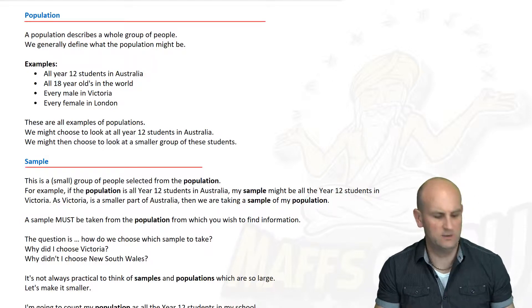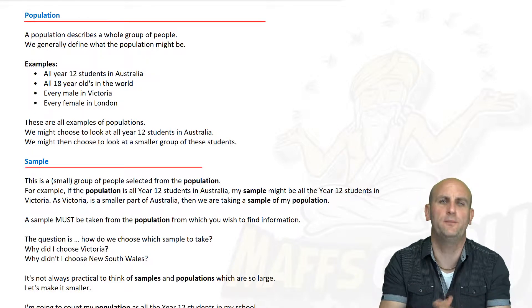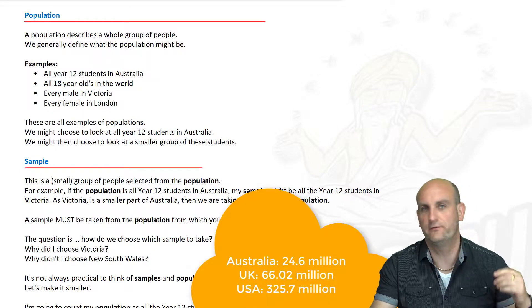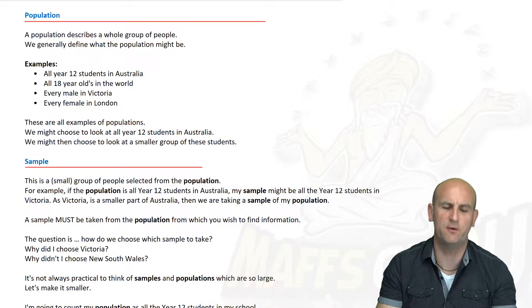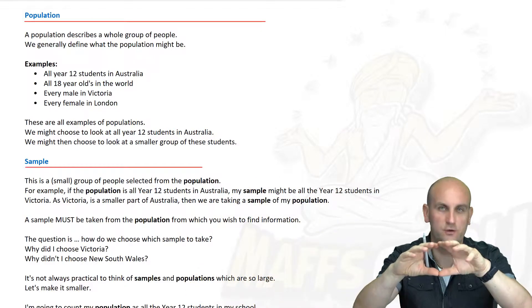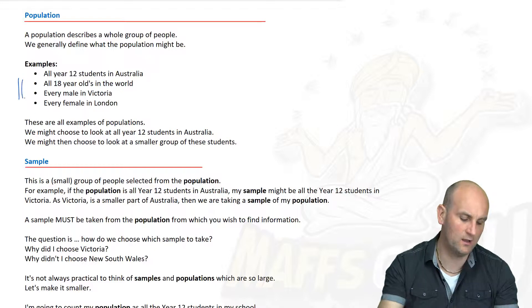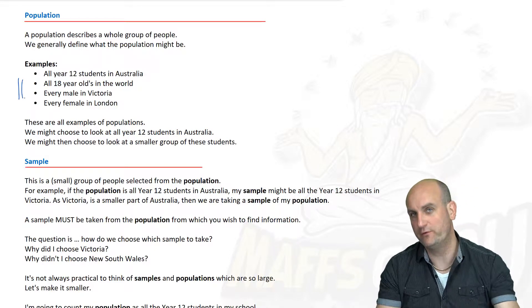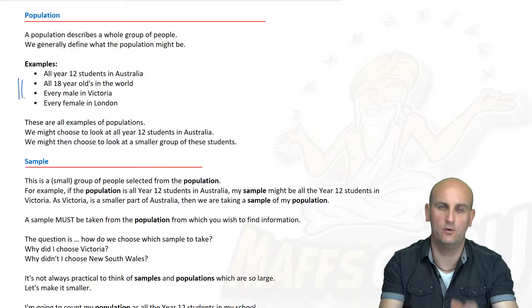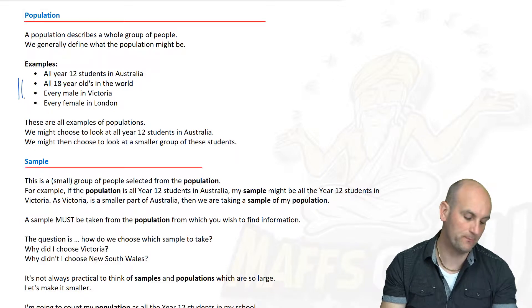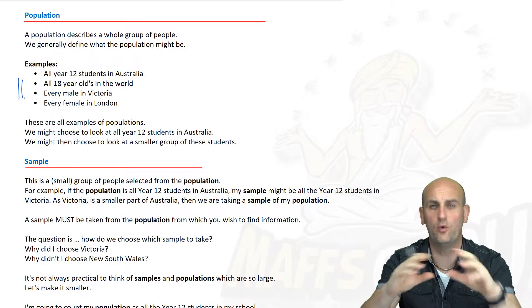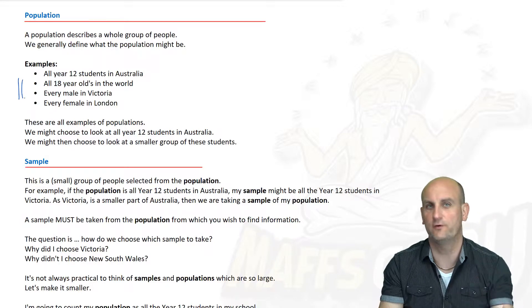So firstly let's look at the word population. Every single one of you lives in a country and you'd probably be able to tell me the population of that country. A population is something we use to classify a whole group of people. Some examples: all Year 12 students in Australia, all 18 year olds in the world, every male in Victoria, or every female in London. These are all populations — large groups of people that I am deciding to find some information about.